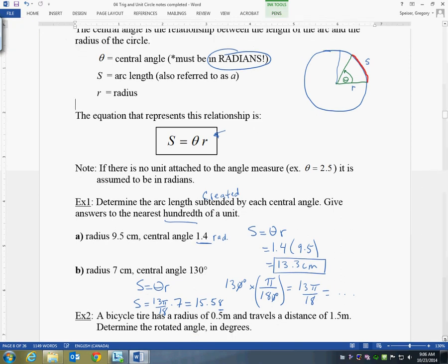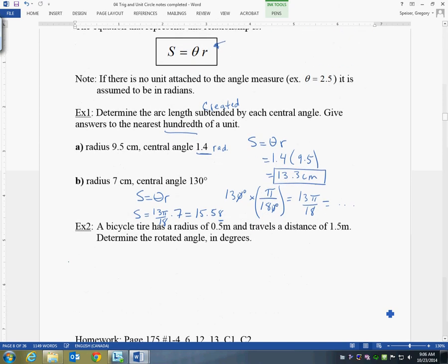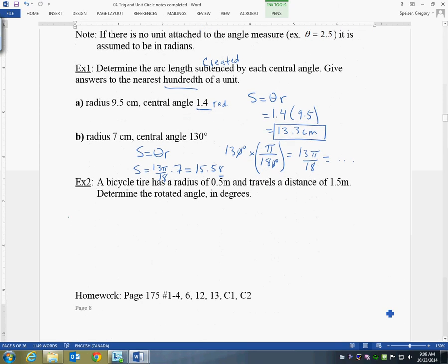Let's take a look at our last example here. A bicycle tire has a radius of 0.5 and travels a distance of 1.5 meters. Okay, well, I'm going to try to draw. All right, so there's my bicycle and it has a radius here of 0.5. There's my radius.